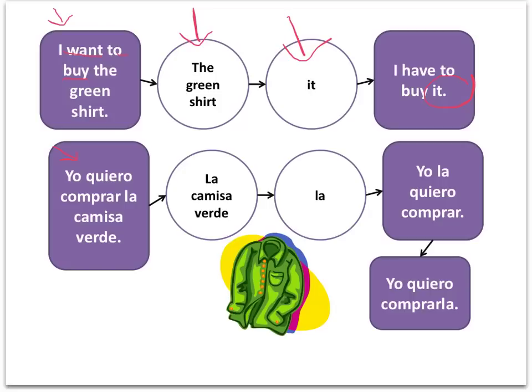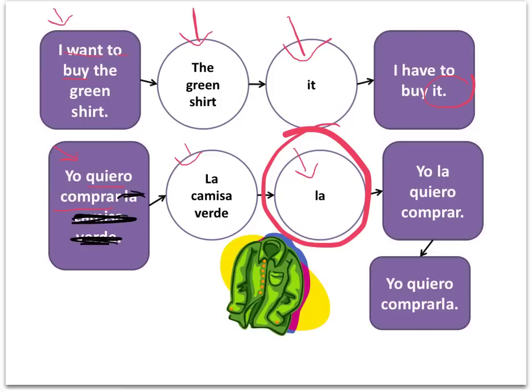In Spanish, we say yo quiero comprar la camisa verde. Yo quiero is I want, comprar is to buy, and la camisa verde is the green shirt. I'll ask myself, ¿qué quiero comprar? What do I want to buy here? That's la camisa verde. We can replace it with la because it's feminine. And because there are two verbs — a conjugated one and an infinitive verb — we have two places we can put la: in front of the conjugated verb quiero, giving us yo la quiero comprar, or attached to comprar, giving us yo quiero comprarla. If you only have one verb, you only have one option. If you've got two, you can put it in front of the conjugated verb or attach it to the infinitive.